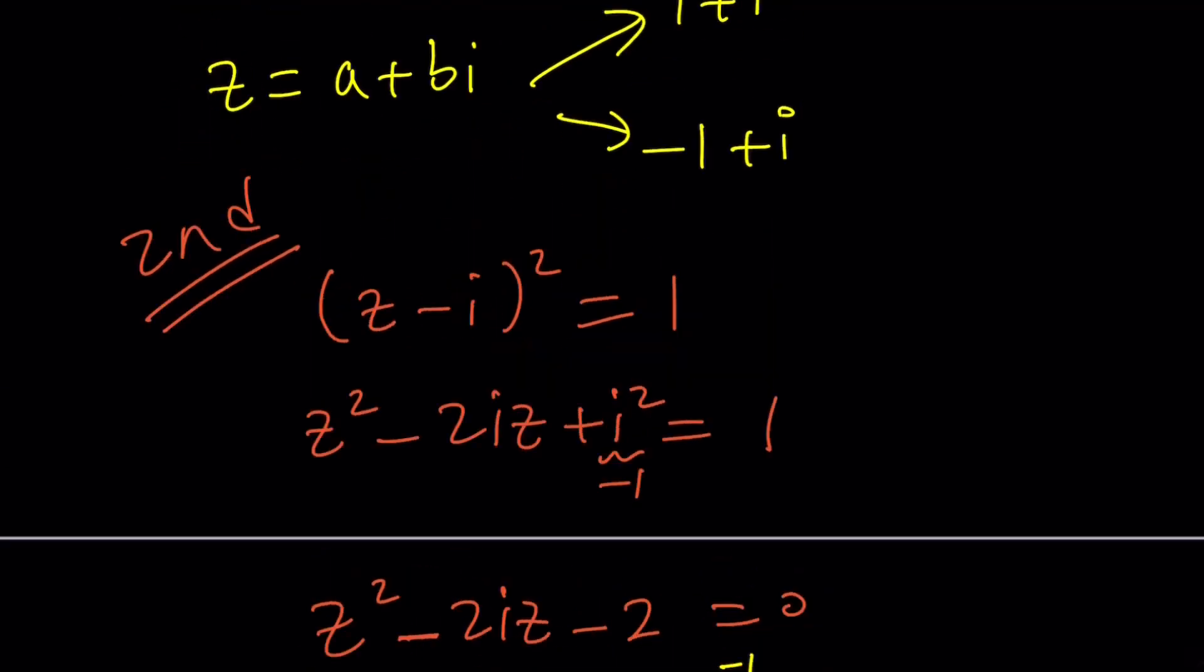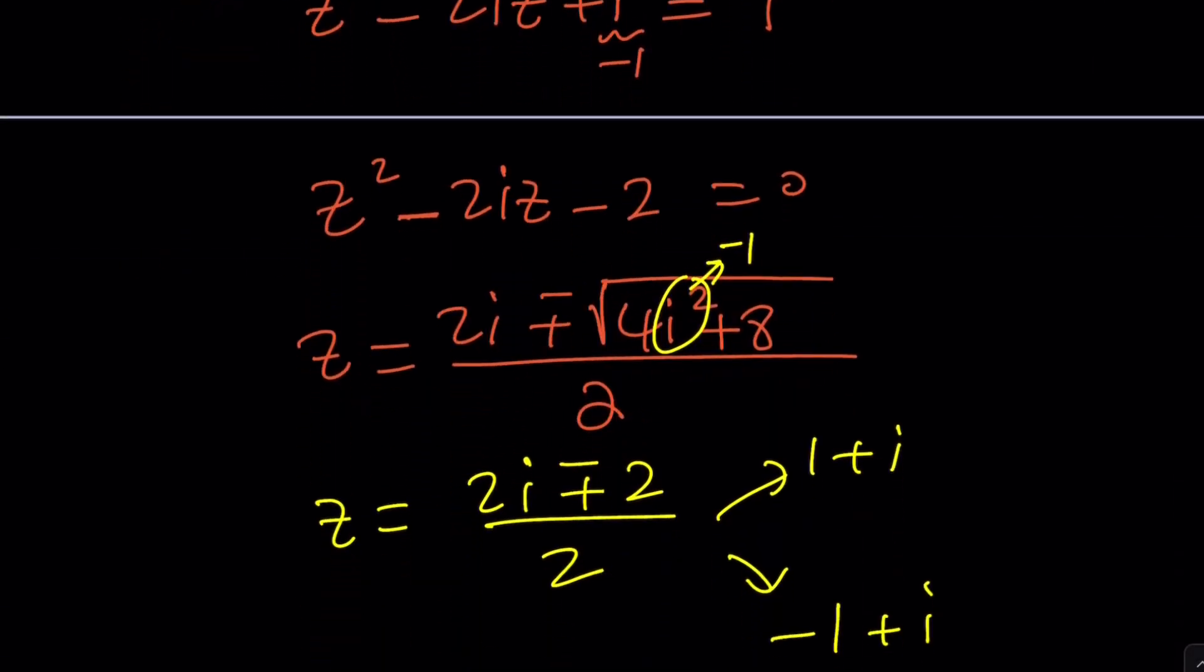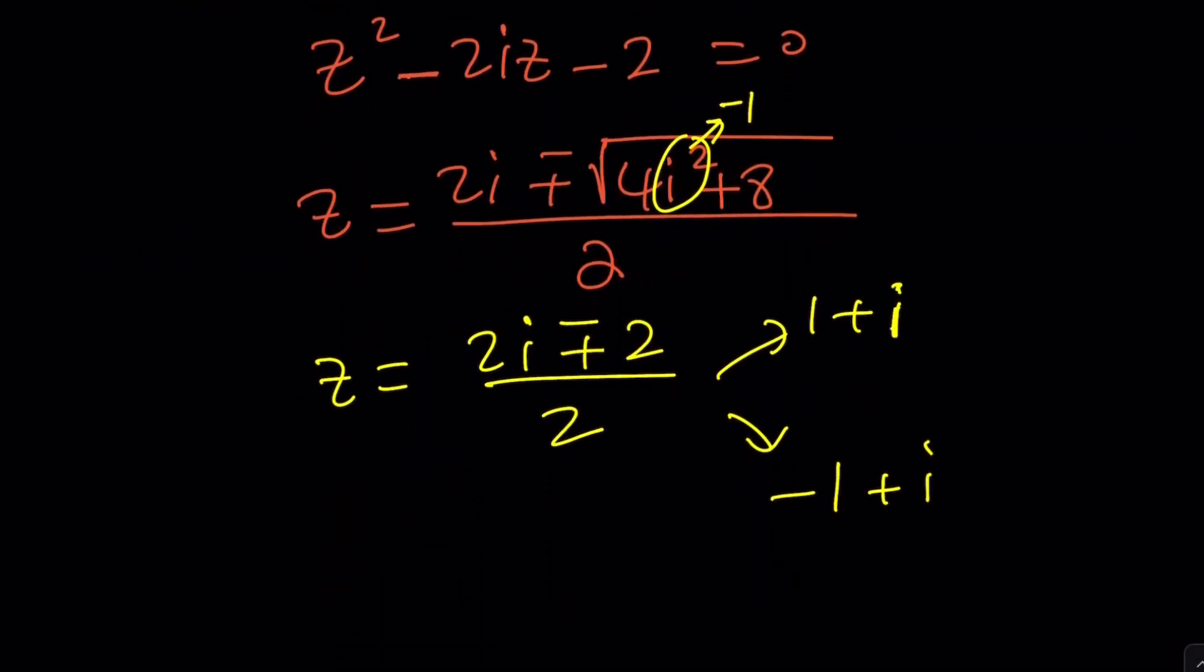And obviously, we can write this as i - 1 or i + 1, but that's better written as 1 + i or -1 + i. And if you compare these findings to the first method, we're going to get the same things. So there are two solutions, 1 + i and -1 + i. This is the second method.